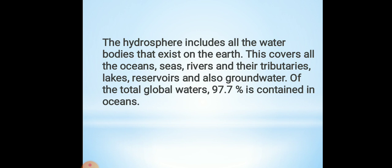We have learnt about hydrosphere. We have seen that hydrosphere includes all the water bodies that exist on the earth. We are mostly learning about the oceans. Hydrosphere means all the water bodies — for example, oceans, seas, rivers, tributaries, lakes, reservoirs, and even groundwater. Nearly 97.7% of global water is in the ocean, and we are going to learn about the oceans in this chapter.